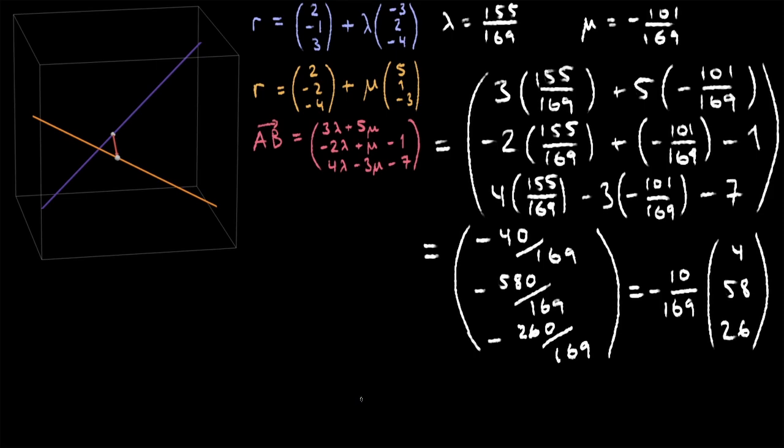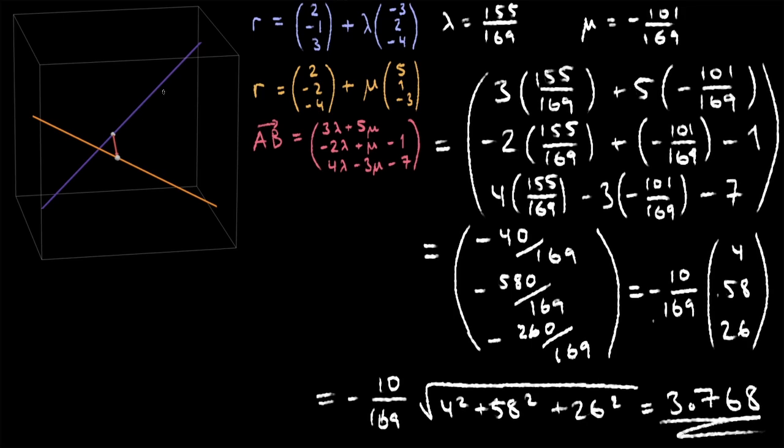And then to calculate the distance, we have to do minus 10 over 169 square root of 4 squared plus 58 squared plus 26 squared. You should get 3.768. That's the shortest distance between these two lines. All of that working out just to get that answer.